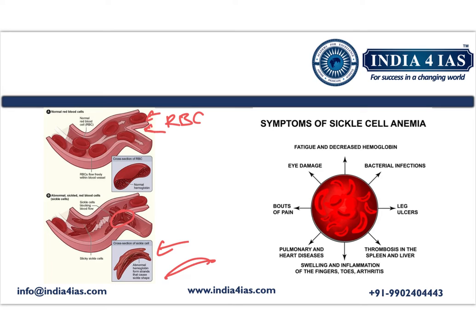The symptoms of sickle cell disease include fatigue and decreased hemoglobin, bacterial infections, leg ulcers, thrombosis in the spleen and liver, swelling and inflammation of the fingers, toes and arthritis, pulmonary and heart diseases, bouts of pain, and eye damage. These are the key symptoms observable in sickle cell anemia.